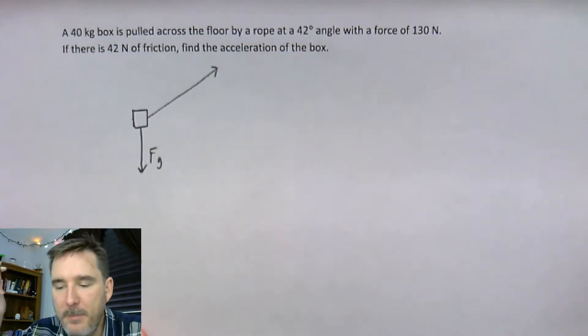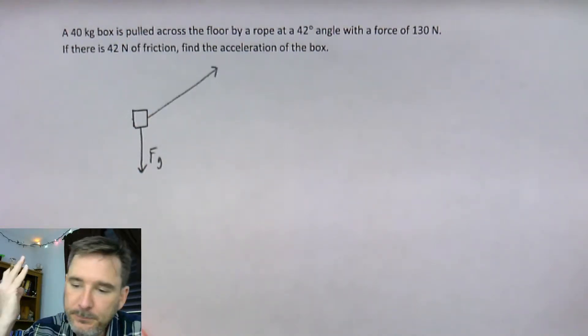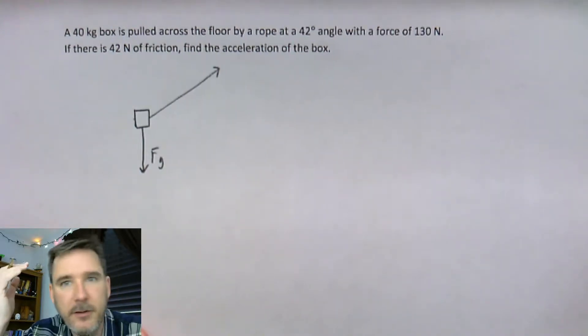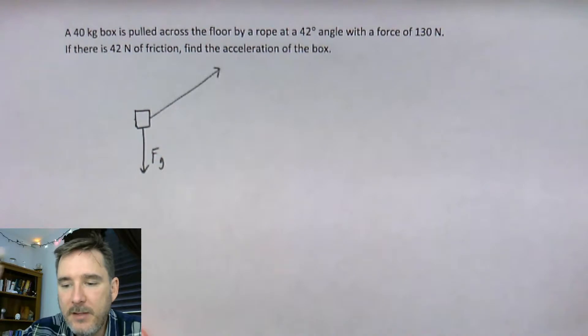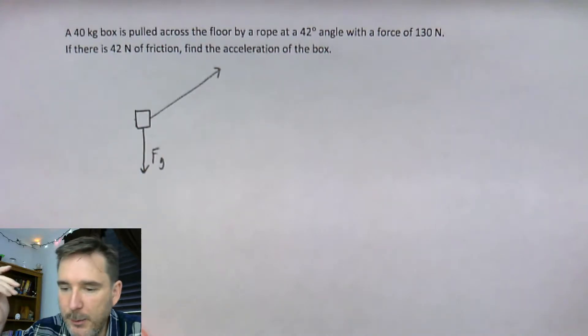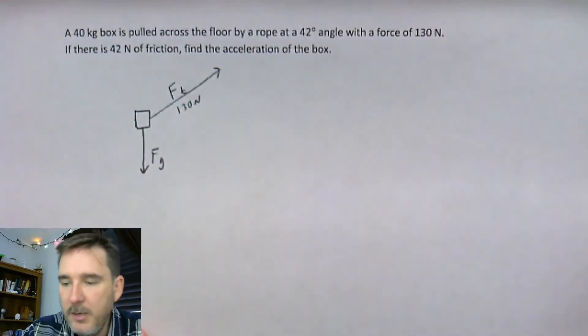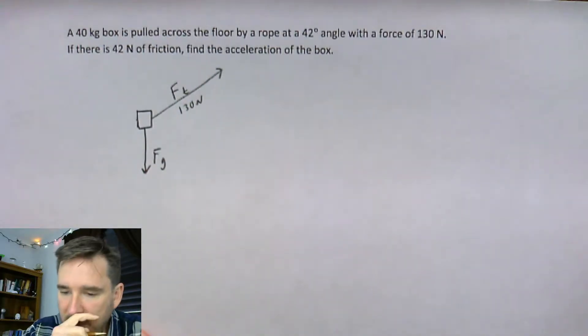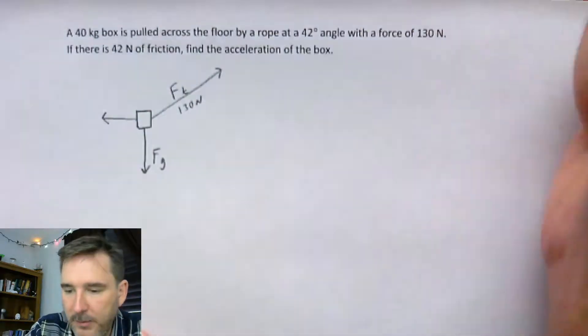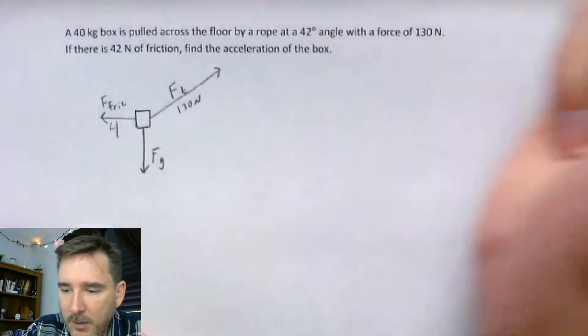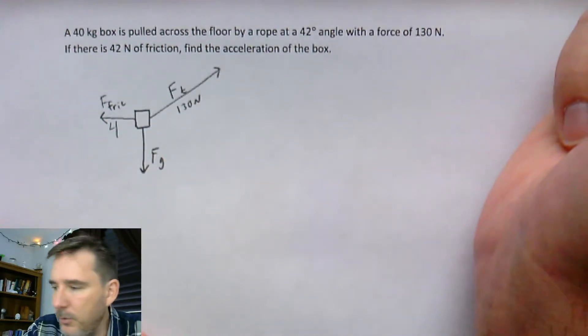It doesn't specify explicitly, but it's pretty well implied that this is a 42 degree angle measured from the horizontal — from the ground. There's nothing vertical to measure it from, so we'll measure it from the ground. This is going to be my tension force at 130 newtons. There's 42 newtons of friction, so I'll draw that a bit less than 130 newtons — this is just representative, not to scale — and this will be my 42 newtons of friction.